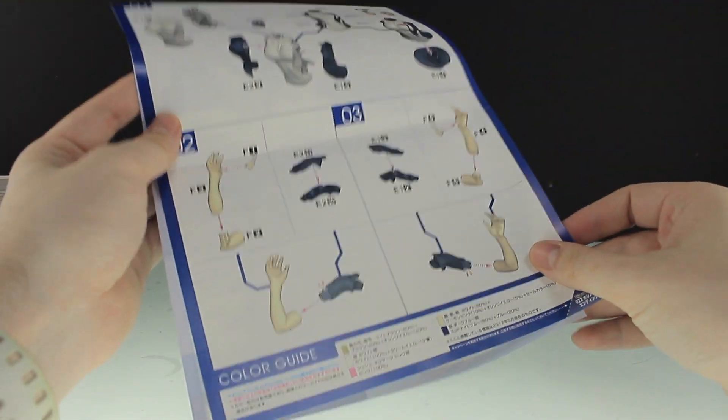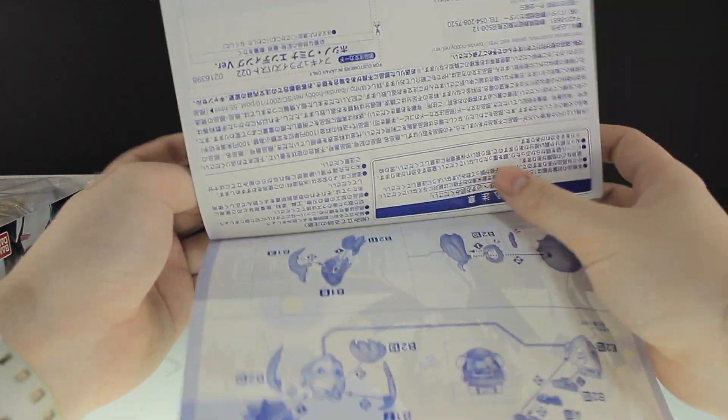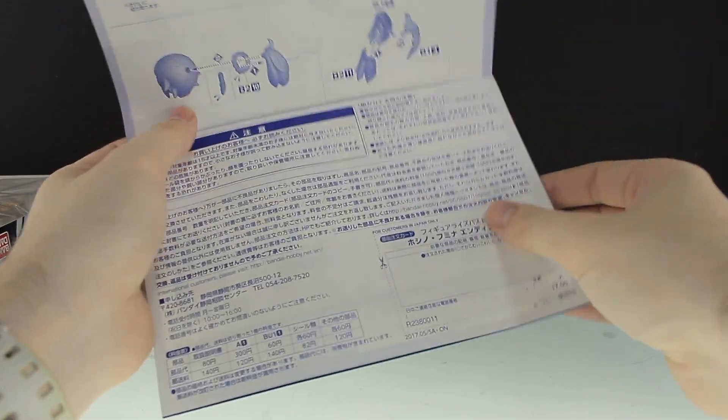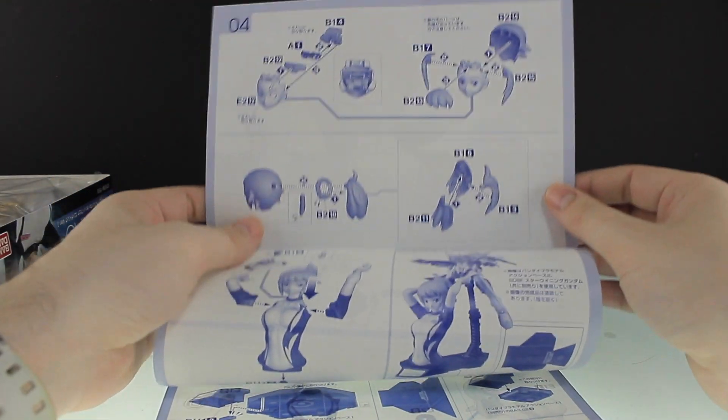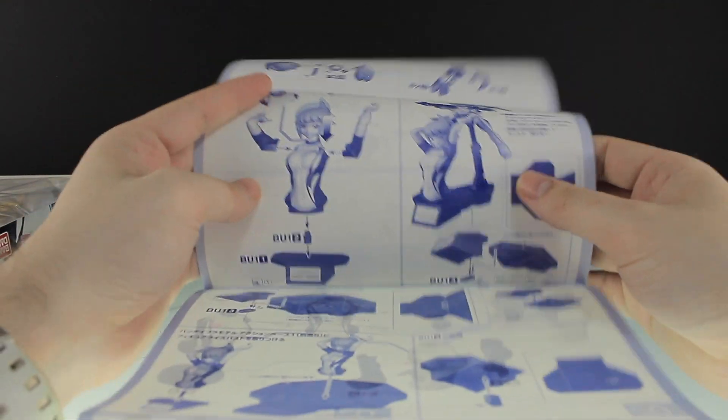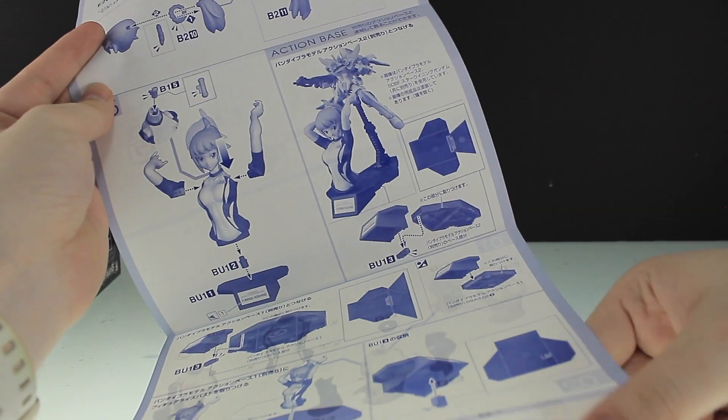There is the assembly and incredibly simple looking. This other side has a section here for replacing missing parts, and in here is some more of the assembly as well as how to attach it to an action base.